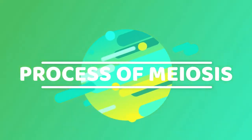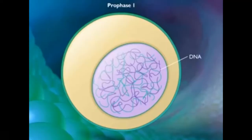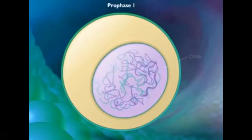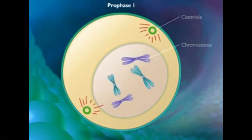Meiosis is a special type of cell division in which the cell undergoes two rounds of cell division to produce four daughter cells. In prophase 1, the DNA coils in each chromosome become visible under a light microscope. Remember, this phase is the longest and most complex phase.